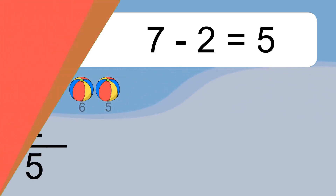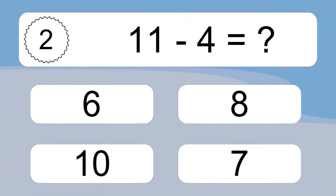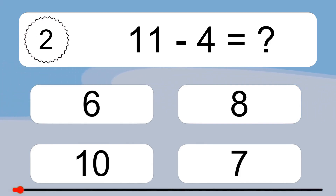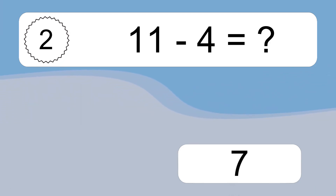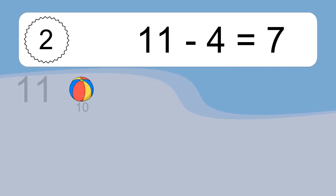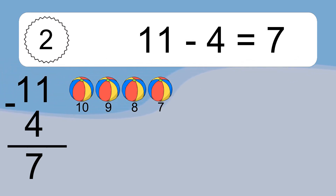11 minus 4 equals what? 11 minus 4 equals 7. Let's count it. 10, 9, 8, 7.